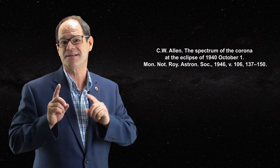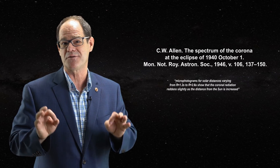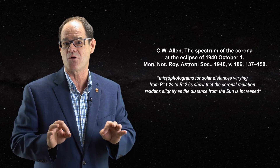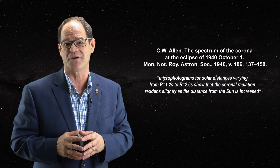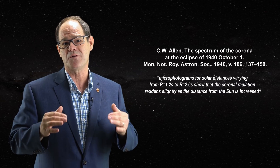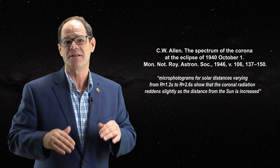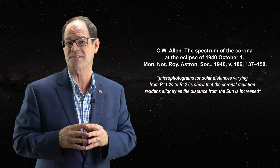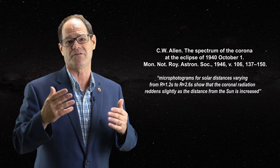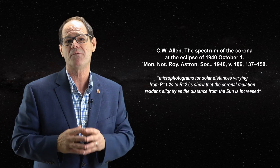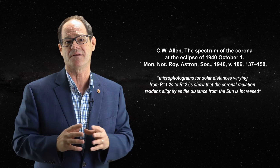Another interesting aspect of the K corona reported long ago is that its continuous spectrum becomes increasingly red, or cooler, at higher elevations above the photosphere. This implies that coronal temperature does not rise from 5,700 degrees at the photosphere to millions of degrees, but rather cools down as expected.